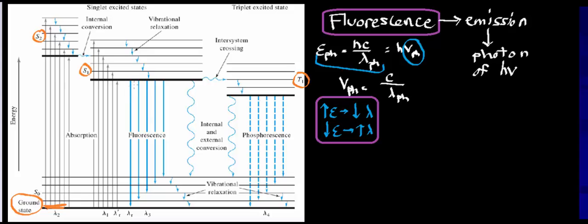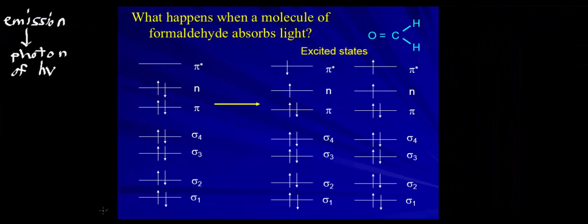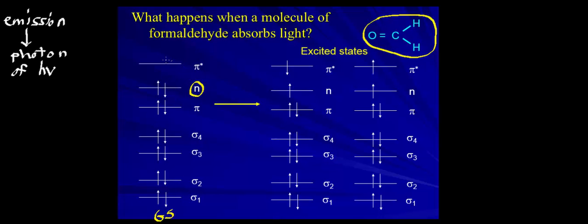I want to talk about what happens when a molecule of formaldehyde absorbs light. Starting with the ground state electronic configuration, I notice that the orbital labeled N has no occupied orbitals above it, and since energy increases going up, this makes it the highest occupied molecular orbital, or HOMO.